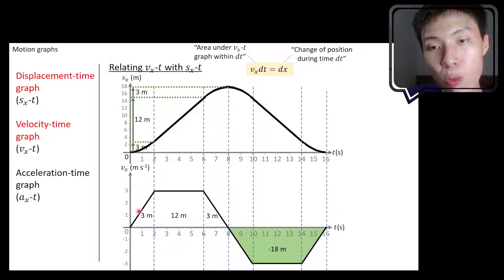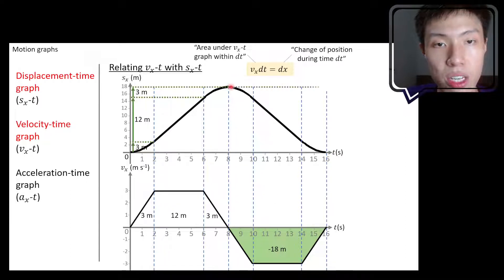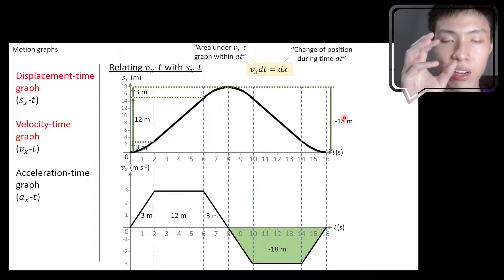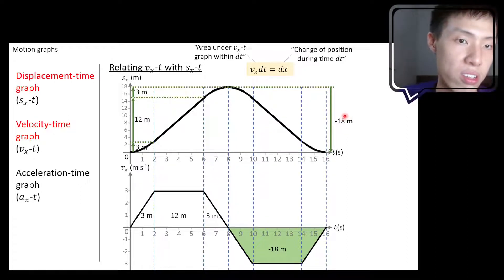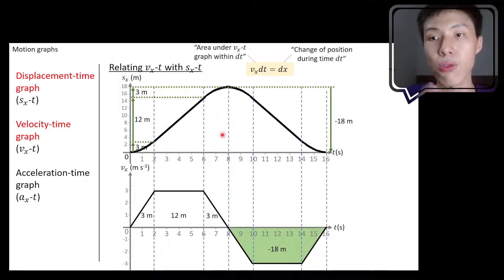Negative 18 meters tells you that the displacement is 18 meters in the negative direction, meaning you are moving towards the left. So technically the object makes a U-turn and moves in the opposite direction. Everything before was positive, meaning motion in the positive x direction, but now since it's negative, the object is moving in the negative x direction for 18 meters. So from time equals 8 to time equals 16, the displacement is negative 18 meters. The area under the graph represents the change of position within that time interval — that's how you relate from the velocity-time graph to the displacement-time graph.